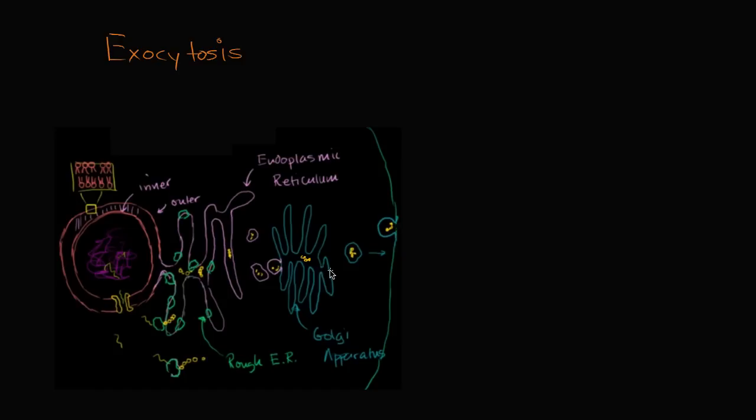And then eventually they're going to bud off of the Golgi apparatus in new vesicles, and those vesicles are going to make their way over to the cell's outer membrane, the plasma membrane, and the membranes of the vesicles are going to merge with the membrane of the cell, and in doing so they're going to release their contents.